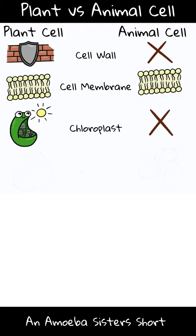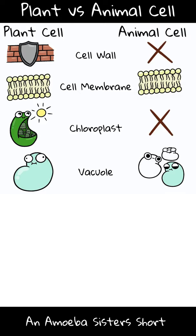Plant cells also have a large central vacuole for storage. Animal cells can have one or more smaller vacuoles. Animal cells have lysosomes which can break down substances, while most plant cells lack lysosomes.